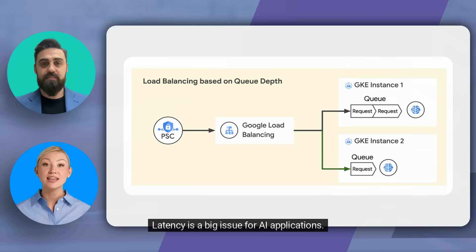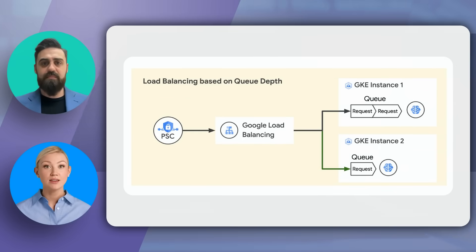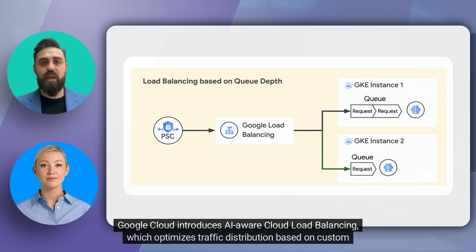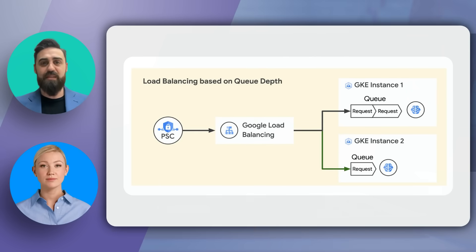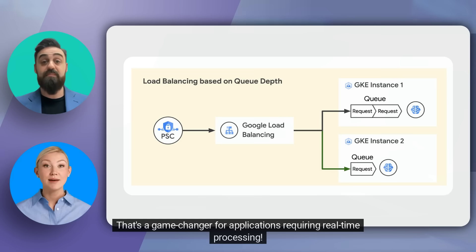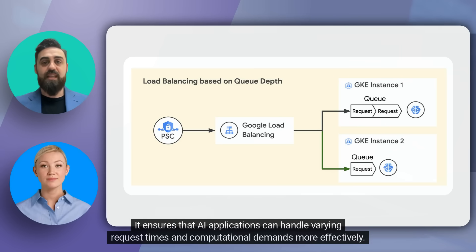Latency is a big issue for AI applications. Google Cloud introduces AI-aware cloud load balancing, which optimizes traffic distribution based on custom metrics like queue depth. This significantly reduces latency and enhances the user experience — a game-changer for applications requiring real-time processing. It ensures that AI applications can handle varying request times and computational demands more effectively.